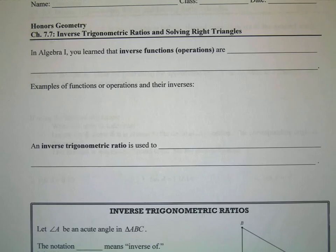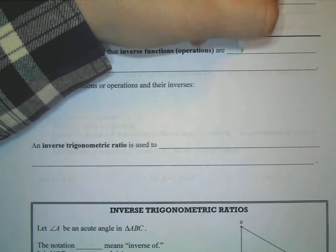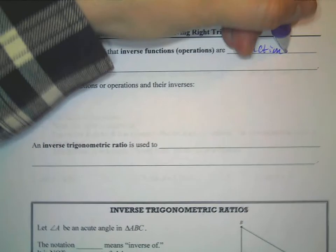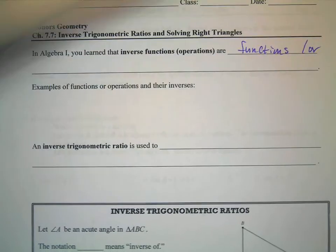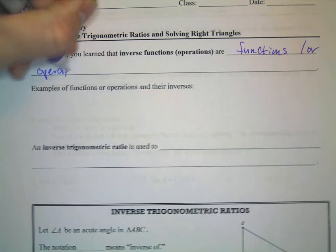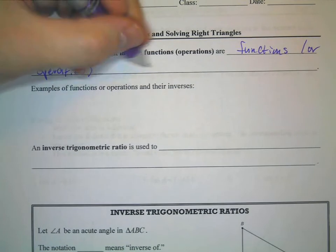We're continuing to talk about trigonometric functions. Today we're going to talk about inverse trig functions and something called solving right triangles. In Algebra 1, you learned that inverse functions or inverse operations are functions or operations that undo each other.